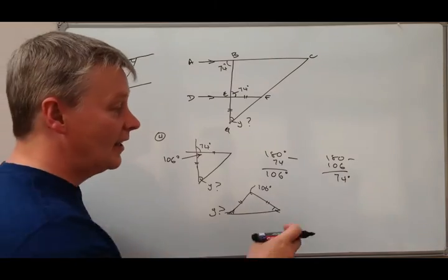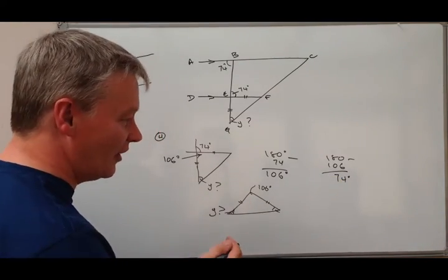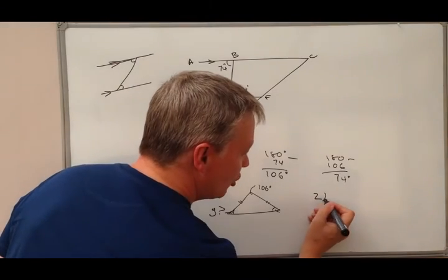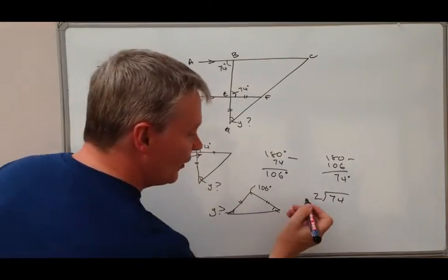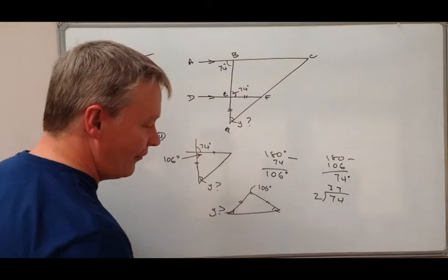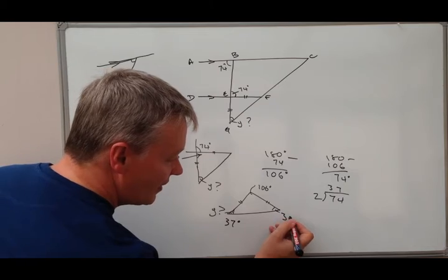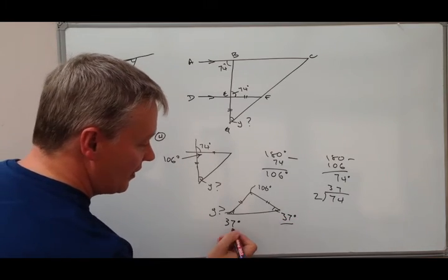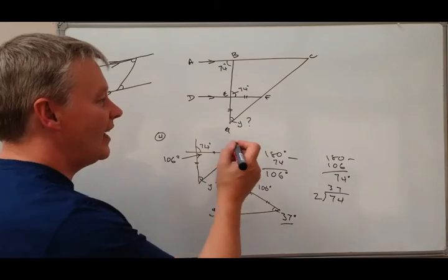In other words, this angle and this angle added together is 74 degrees, and they're both the same. So if we split them in two, how many twos are there in 74? Well that's fairly straightforward, that's going to be 37. So this angle here is 37 degrees and this angle here is 37 degrees. This value of Y is 37 degrees.